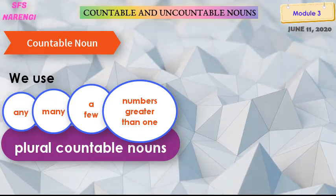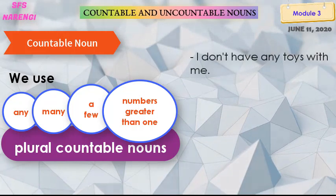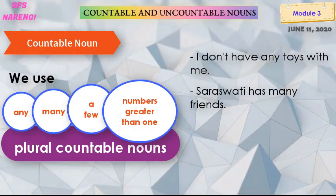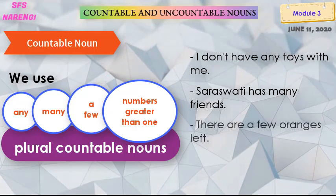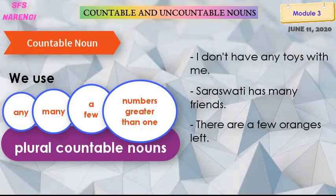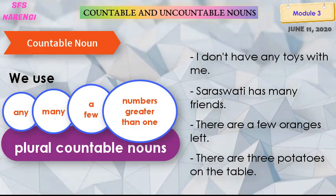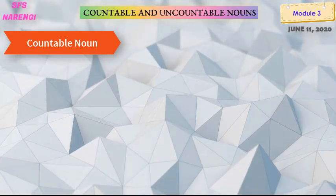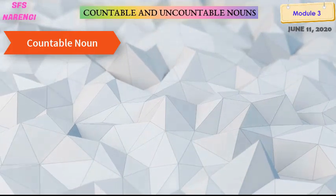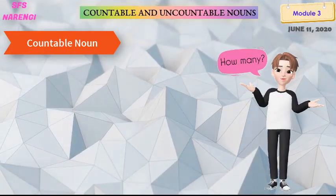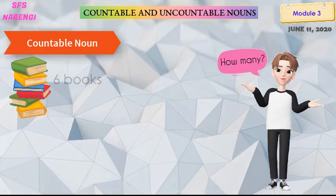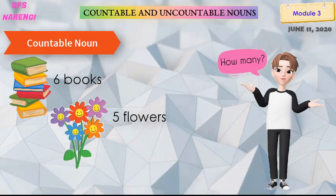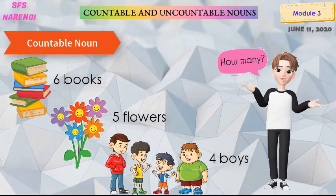For plural countable nouns, we use words such as 'any,' 'many,' 'a few,' or numbers greater than one. For example: 'I don't have any toys with me,' 'Saraswati has many friends,' 'There are a few oranges left,' 'There are three potatoes on the table.' Countable nouns answer the question 'how many' — for example: how many books? Six books. How many flowers? Five flowers.